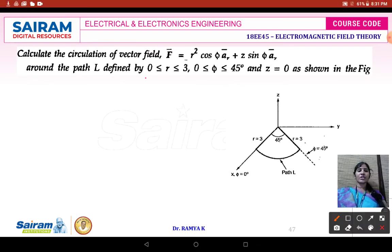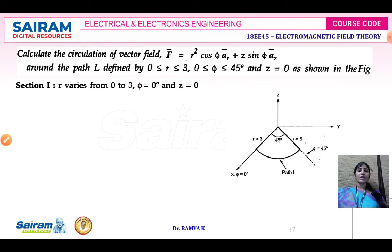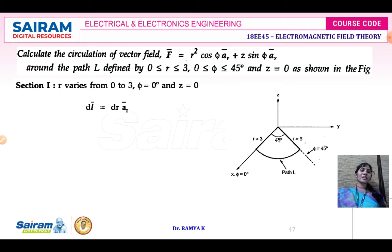The radius r ranges from 0 to 3, phi is 45 degrees — the angle made from the x-axis to the point under consideration — and z is 0, so there is no height of the cylinder. The differential elemental length dl equals dr times ar, because z is 0.